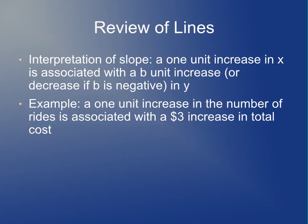The way you interpret a line is that a one-unit increase in x is associated with a b-unit increase in y — or a b-unit decrease in y if b is negative. So in this case, a one-unit increase in the number of rides is associated with a $3 increase in the total cost.